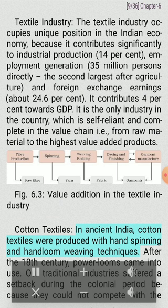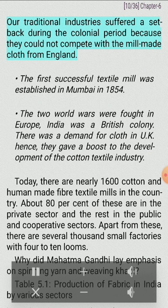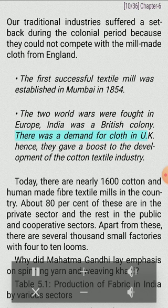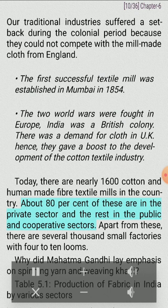Cotton textiles: In ancient India, cotton textiles were produced with hand-spinning and hand-loom weaving techniques. After the 18th century, power looms came into use. Our traditional industries suffered a setback during the colonial period because they could not compete with mill-made cloth from England. The first successful textile mill was established in Mumbai in 1854. The two World Wars gave a boost to the development of the cotton textile industry. Today, there are nearly 1,600 cotton and human-made fiber textile mills in the country. About 80% of these are in the private sector and the rest in the public and cooperative sectors. Apart from these, there are several thousand small factories with 4-10 looms.